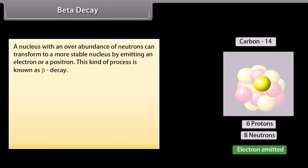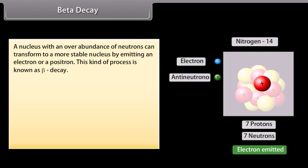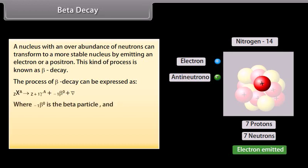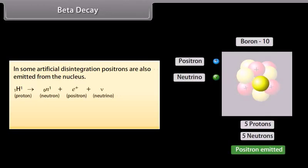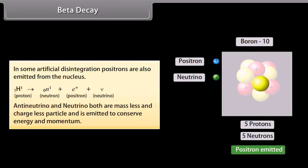Beta decay: A nucleus with an over-abundance of neutrons can transform to a most stable nucleus by emitting an electron or a positron. This kind of process is known as beta decay. This process of beta decay can be expressed as shown, where the beta particle and the anti-neutrino are emitted. For example, in some artificial disintegration, positrons are also emitted from the nucleus. Anti-neutrino and neutrino both are massless and chargeless particles and are emitted to conserve energy and momentum.